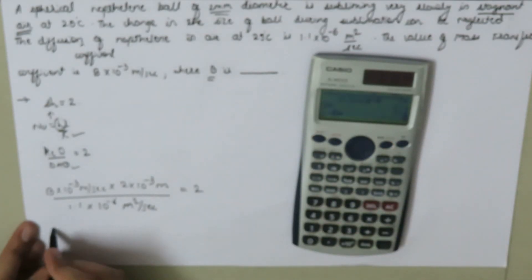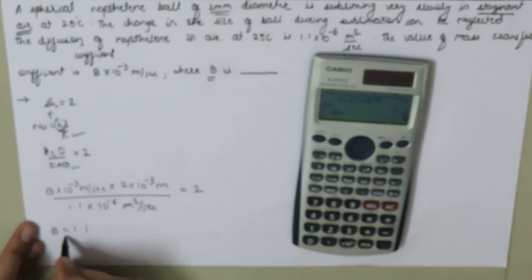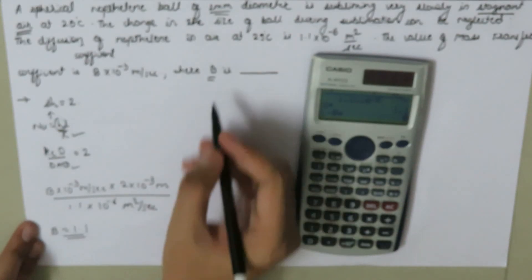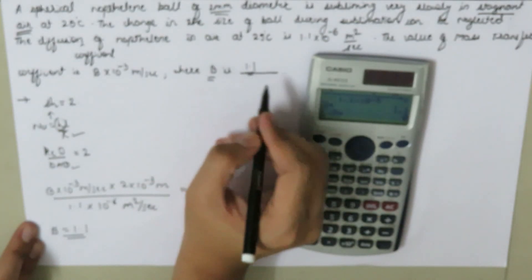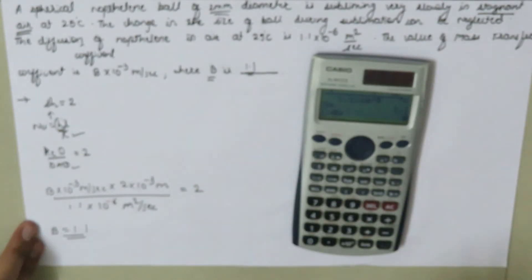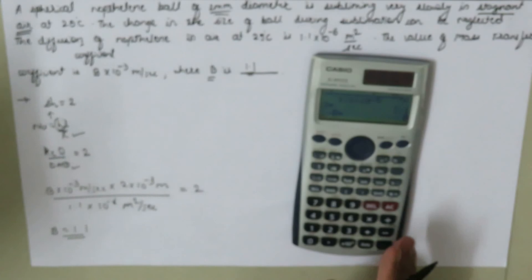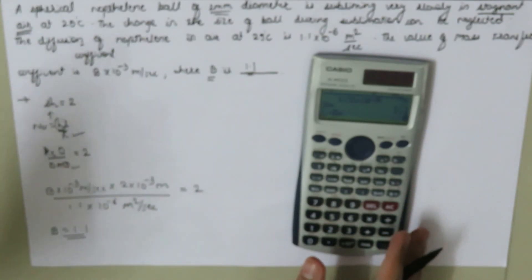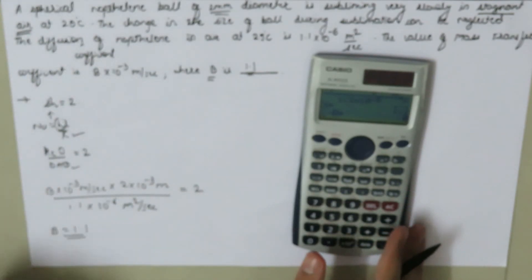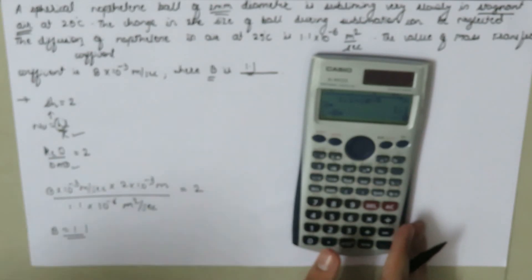Solving, B equals 1.1. So this was all the information regarding the Sherwood number for very low Reynolds number. Thank you for watching this video.